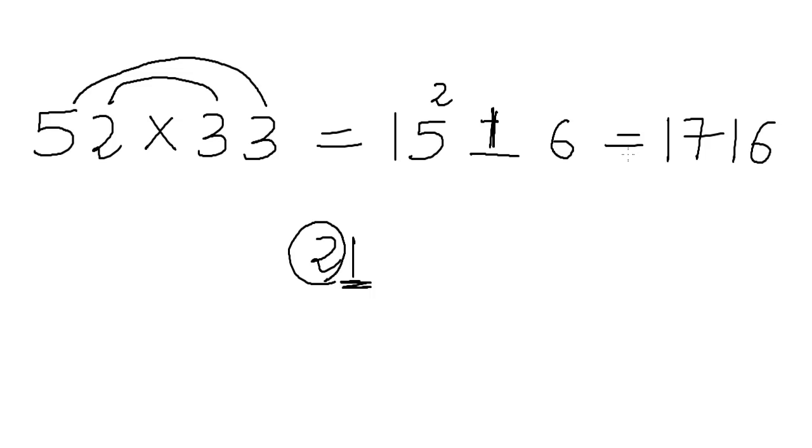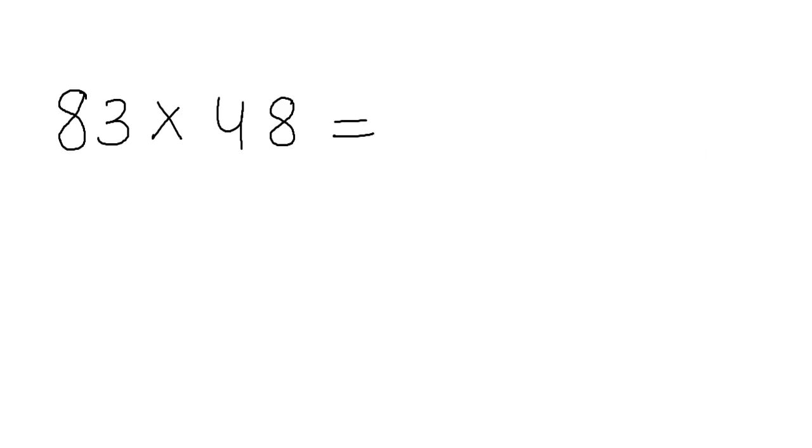Let's look at one more example to clarify the concept better. Now suppose we have to find 83 times 48 which is a more complex multiplication. Then as I said first to get the first part of our answer we multiply the first digit which is 8 into 4. So we will get 32. Then we will leave a blank space in between.